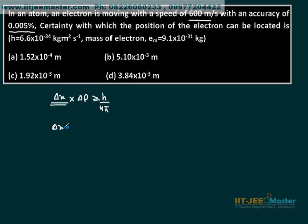For the least value, if we solve for delta x, delta p can be written as mass times delta v, which should be greater than or equal to h upon 4 pi.